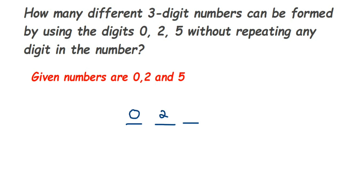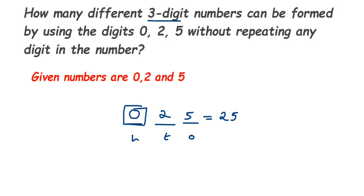If you see a number like 025, it is not a three-digit number — it is a two-digit number, because 0 in the beginning is not considered. This number is equal to 25. Since we are forming three-digit numbers, we cannot take zero in the hundreds place. Zero can appear in the ones place or tens place, but not at the start. If the number starts from zero, it's a two-digit number, not a three-digit number. So we can only start with 2 or 5.